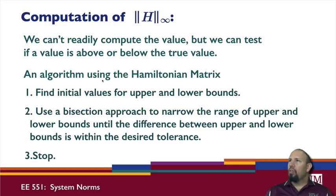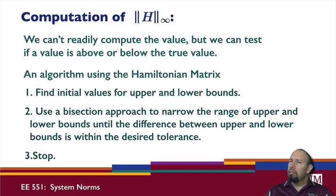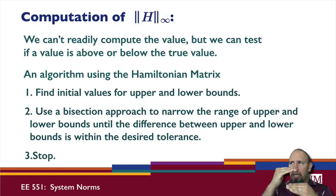An algorithm that uses the Hamiltonian matrix goes like this. We find initial values for upper and lower bounds on the H-infinity norm. We can find a lower bound by just evaluating the transfer function at any value of omega. To pick an upper bound, it's not so easy. Then we use a bisection approach to narrow the range between the upper and lower bounds until the difference is within the desired tolerance, and then we stop.